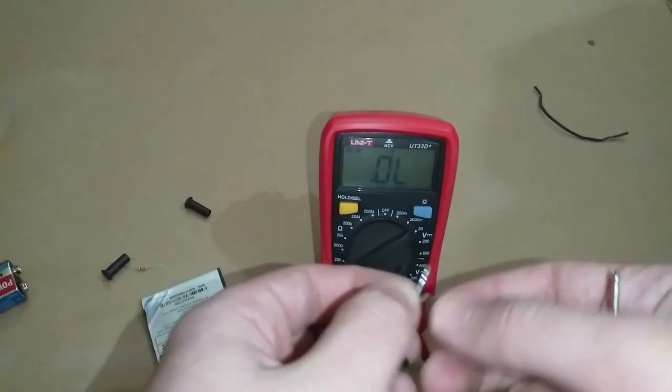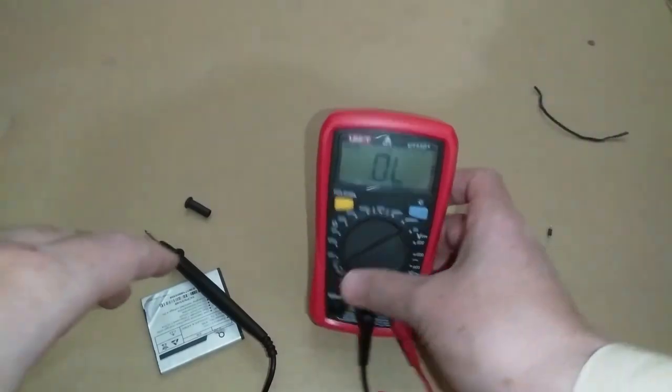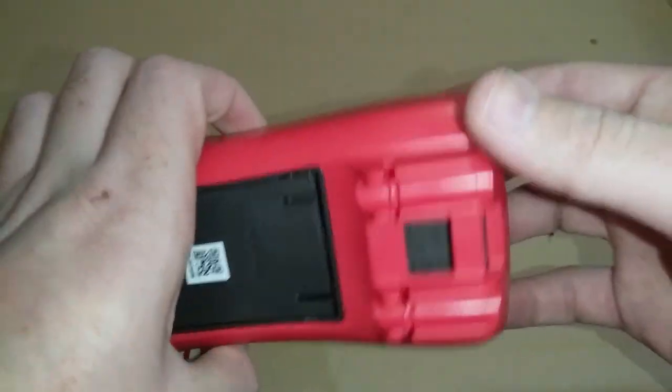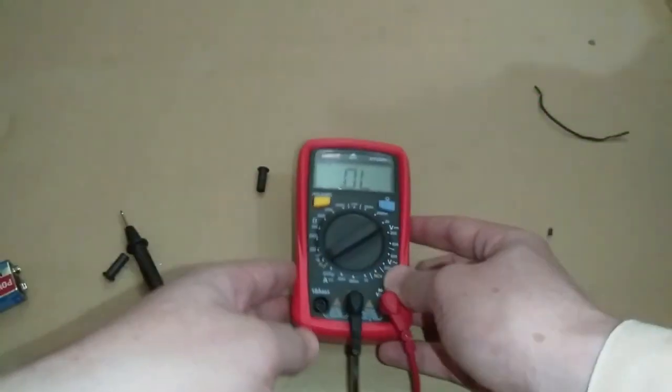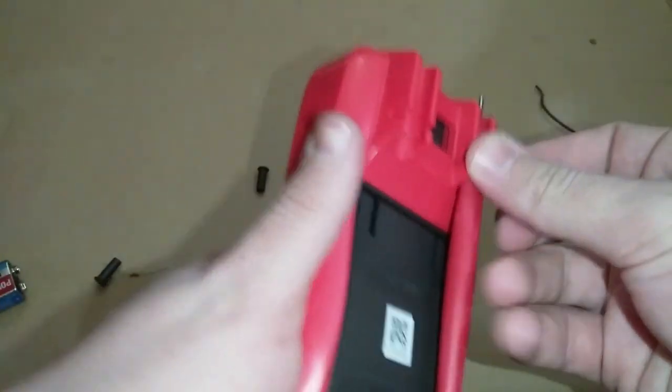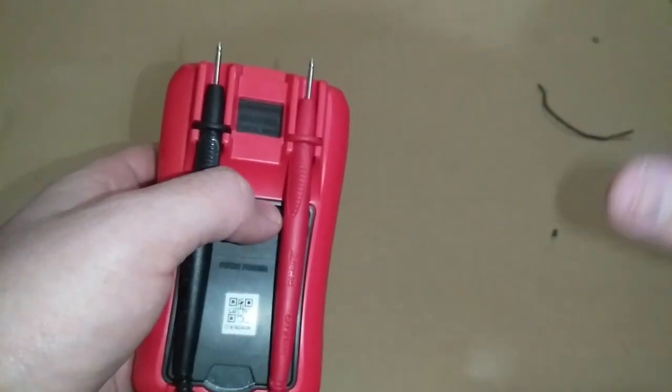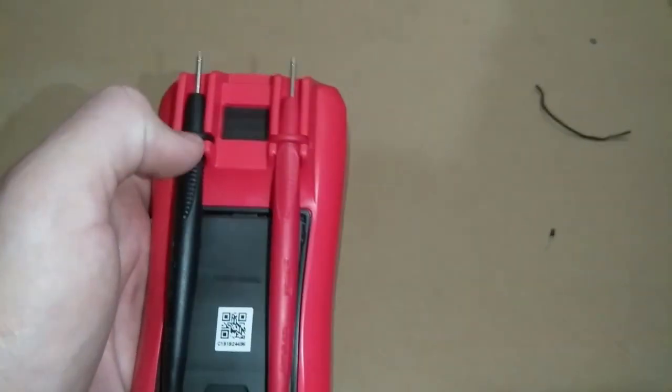This was all about this multimeter. It is a very good multimeter I think and you can replace the batteries over here by removing this cover and then you can replace the batteries. So it was all about this multimeter and I hope you will have liked this video. If you like this, press the like button and if you want to learn more about electronics and some electronics projects and product reviews, you have to subscribe my channel to get latest and new projects with time. Thank you.